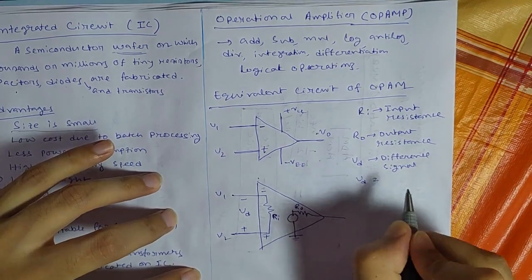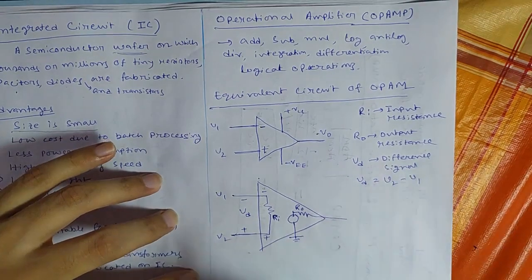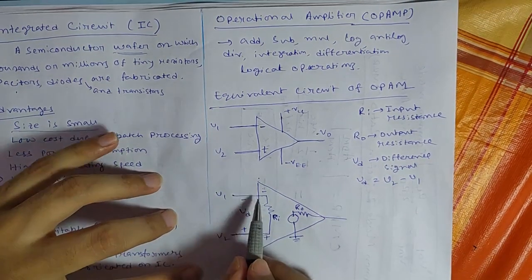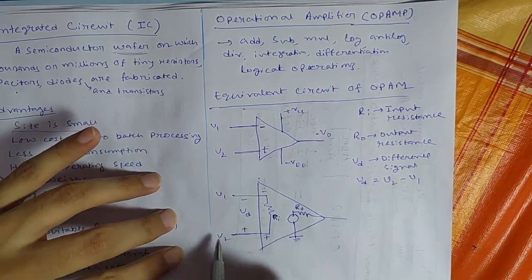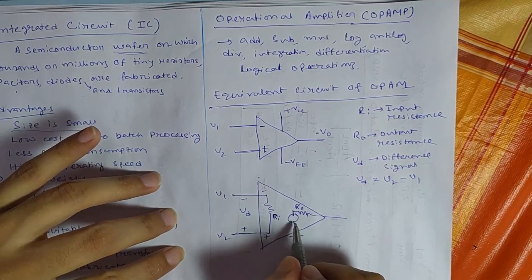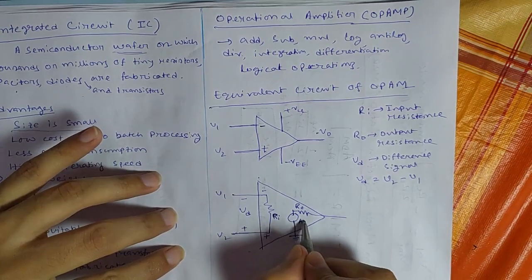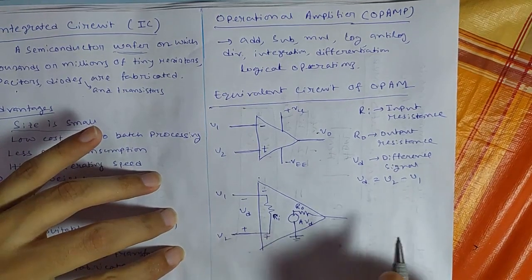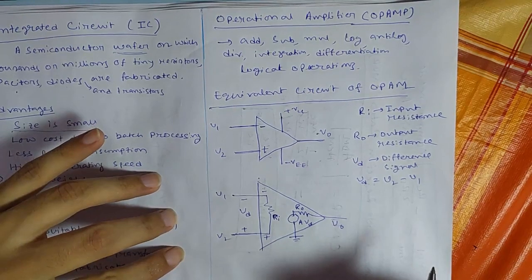And VD equal to V2 minus V1. So non-inverting voltage minus inverting voltage. So if the difference of the input signal is VD, then the voltage will be here. So it is voltage dependent voltage source. So voltage will be A into VD. And output will be V0.